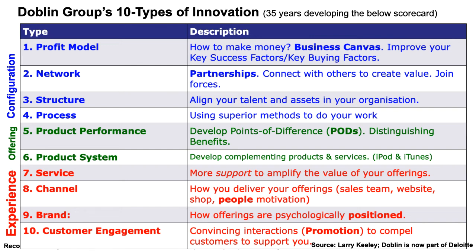You could also innovate your experience. Number seven: amplify the support you're offering your customers. How do you deliver your offering? That's channel innovation — you could come up with a new motivated sales team or revamp your website to do more online sales than offline. And then brand innovation: psychologically positioning a point of difference on your label. Like positioning that shampoo by saying it's got four vitamins — which do absolutely nothing for your hair — but makes everybody think their hair looks healthier. Number ten: customer engagement — how will you promote better than the competitor? All ten of those ideas could be your point of difference versus the competitor.